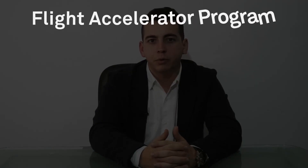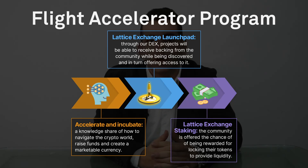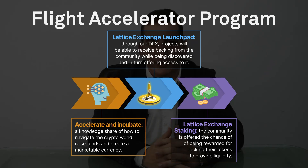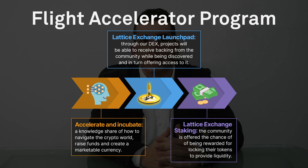And this brings us to our ecosystem partners. Constellation has a robust accelerator program for legacy businesses and entrepreneurs who want to join our ecosystem and build with us on the hypergraph. We educate them in everything, from what's a blockchain to how to mint their own L0 token.